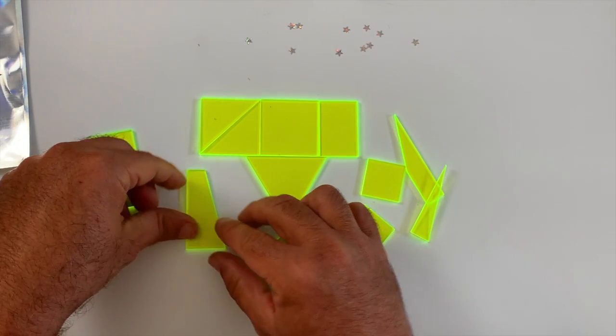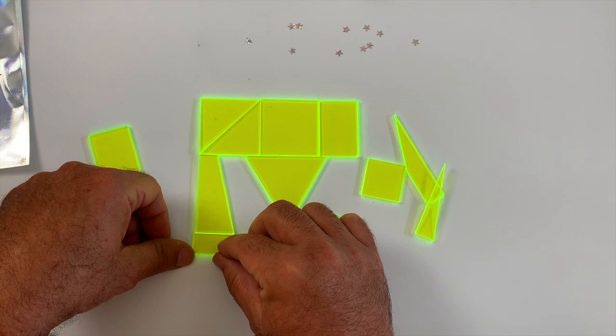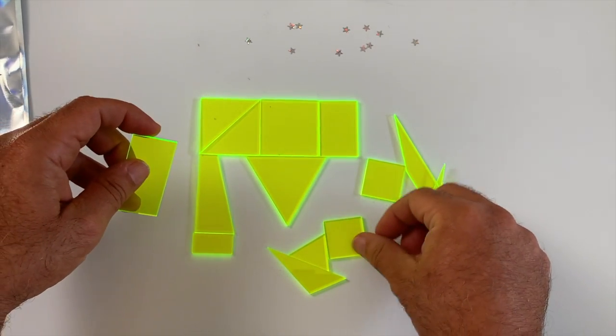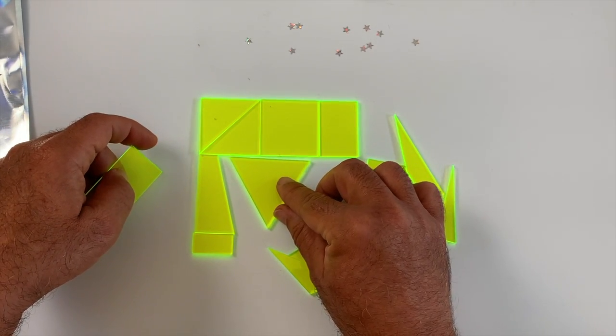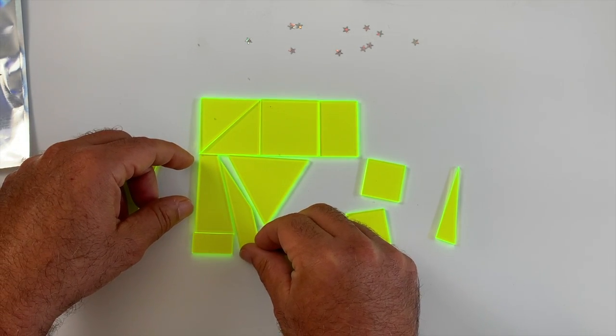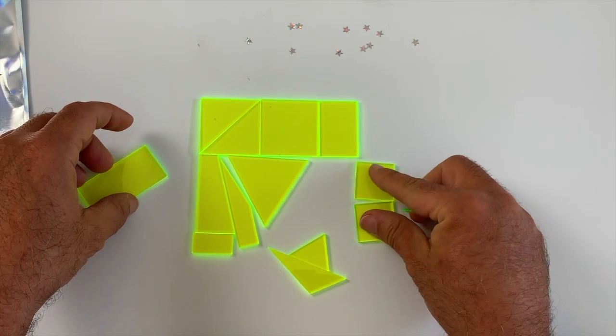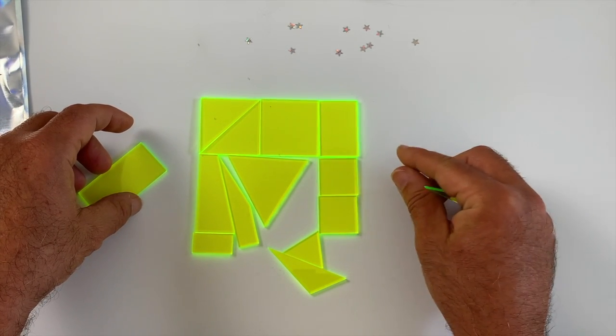That triangle doesn't go in the center. Maybe it goes here like this and this goes here, right? And now you're looking for a piece that will go in there. Well, what could possibly go in there? This? Not quite. So you're going to be playing with the puzzle, you're going to try to find out which piece is left out.